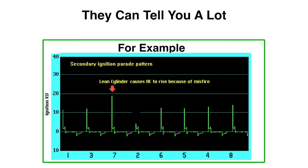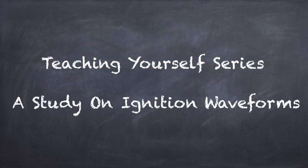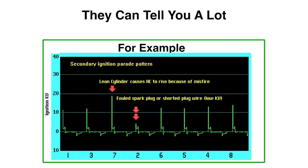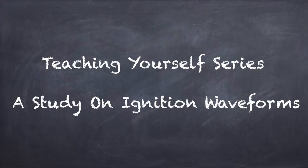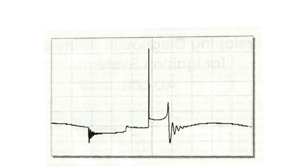And if you look at the arrow on the bottom, that's a fouled spark plug or shorted spark plug wire. So just by being able to interpret waveforms it can lead you to the problem. So let's look at teaching ourselves a study on ignition waveforms. This is a very detailed breakdown and description of secondary waveform analysis.